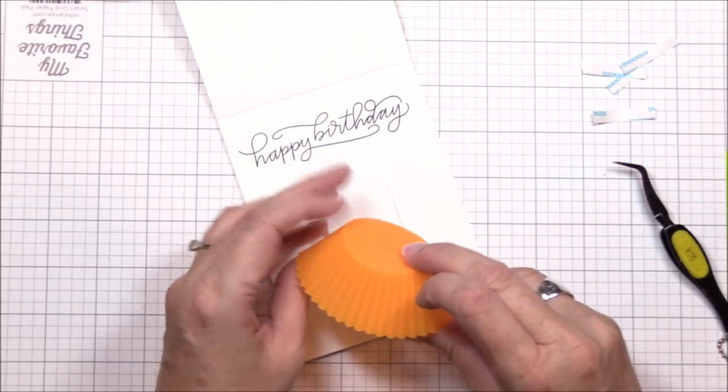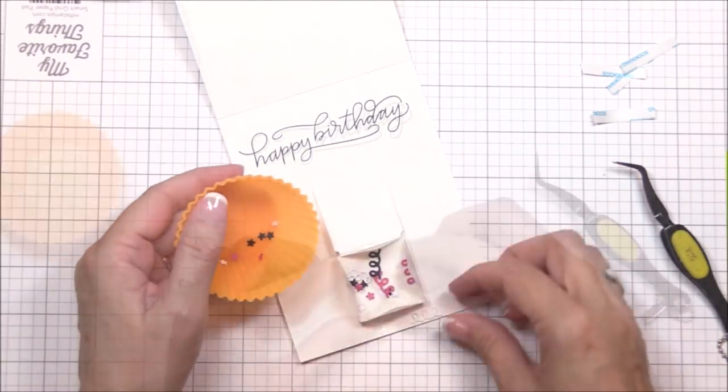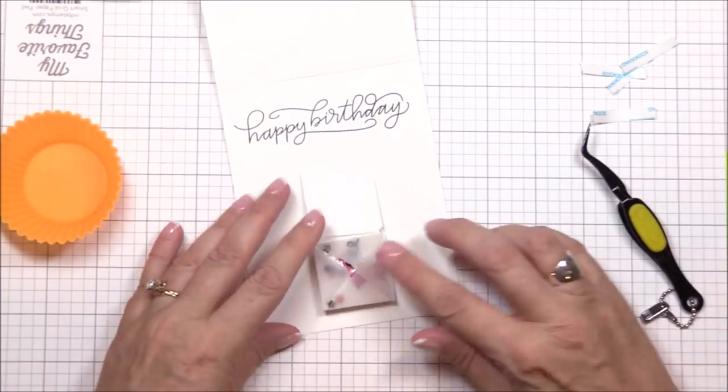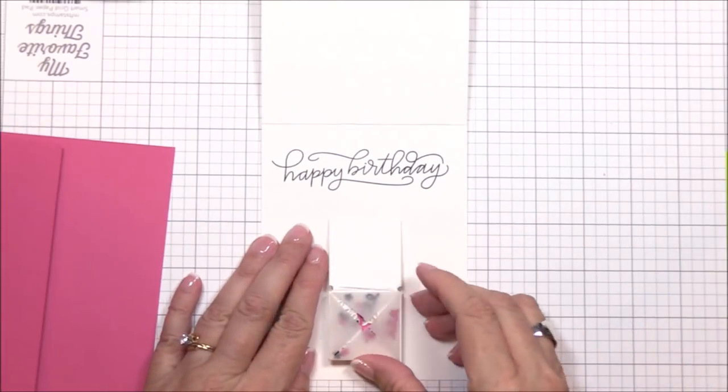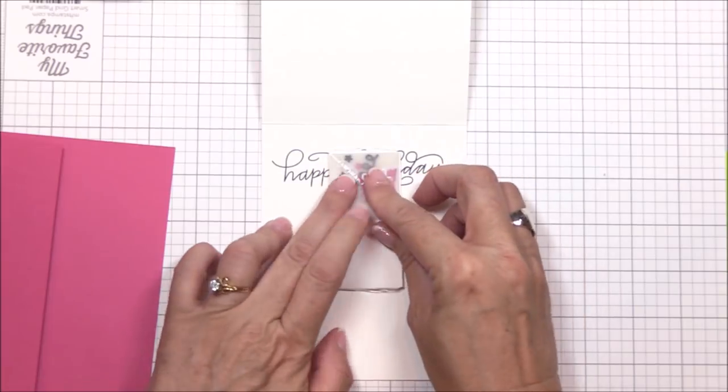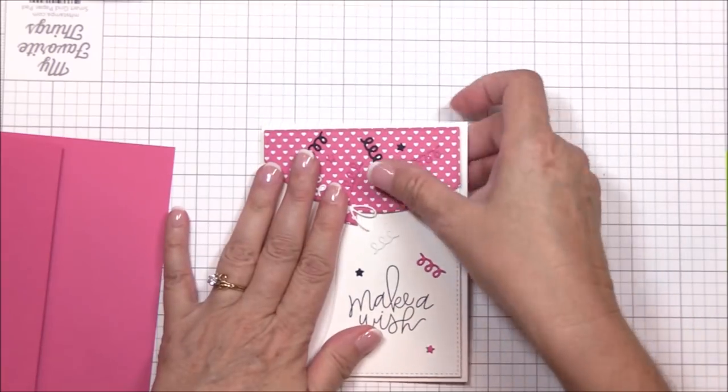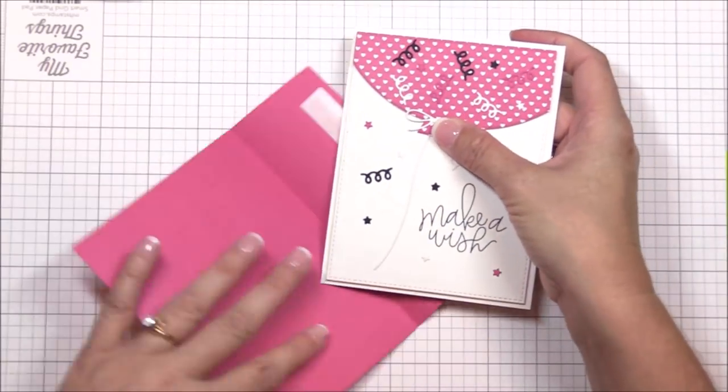I'm filling the confetti pouch with several pieces of confetti. About a half a teaspoon or so is plenty. And then I'll fold those vellum flaps over so that the confetti is safely enclosed. And now I can press the flinger mechanism up into position and fold the front of the card base to keep it in place.